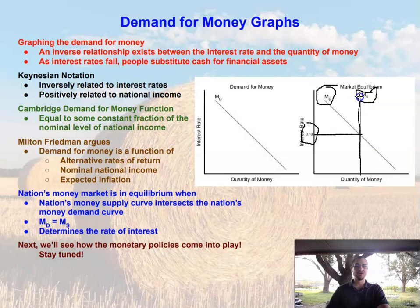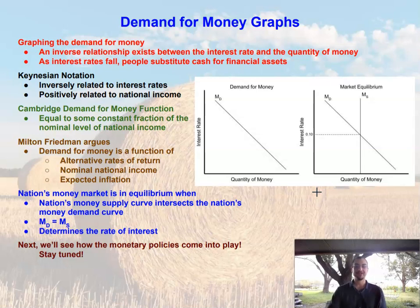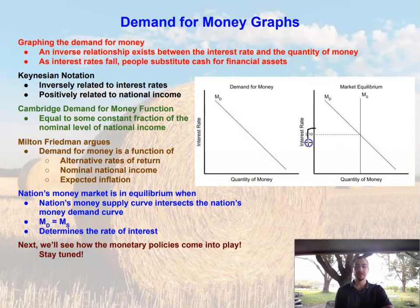The money supply is a vertical line, which means we're assuming it is a constant value. The Fed has already dictated what the money supply needs to be, so it's steady and not changing. That intersection of the demand for money and the supply of money — with a constant money supply — helps us determine the market rate of interest.